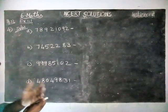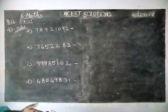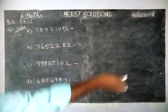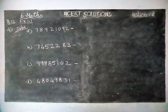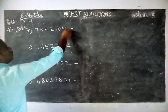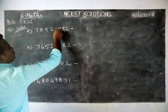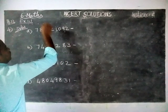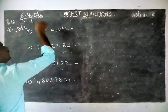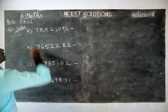In the International System of Numeration, from the right-hand side, every 3 digits we will make commas. So: ones, hundreds, comma, thousands, ten thousands, hundred thousands, comma.